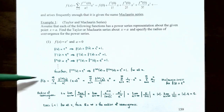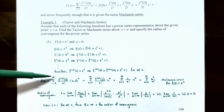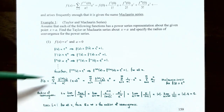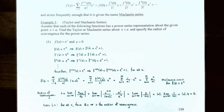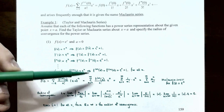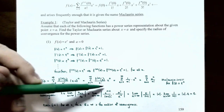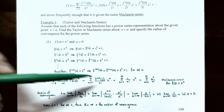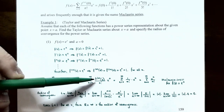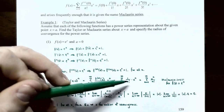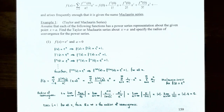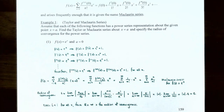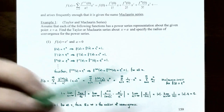Since all derivatives evaluated at 0 equal 1, we can write the Maclaurin series as the sum from n=0 to infinity of x^n / n!. This is the Maclaurin series (a=0) for f(x) = e^x. Now let's find the radius of convergence using the ratio test: the limit as n→∞ of |a_{n+1}/a_n| equals the limit of |x^{n+1}/(n+1)!| divided by |x^n/n!|, which simplifies to |x|/(n+1).